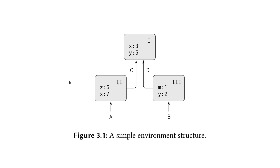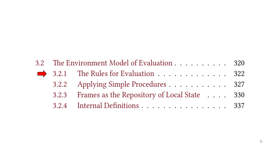If we're in frame 2 and looking for the value of x, because x exists in this frame we're going to retrieve the value 7. However, if we're looking for y, because y does not exist in this frame we'll go to the enclosing frame, which is frame 1, and look up the value of y there, which is 5. So it's pretty straightforward — each of these gray boxes represents a frame and all of the frames together represent an environment.